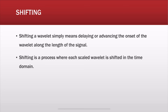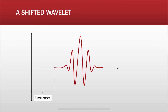What is shifting? Shifting is in the time domain. Shifting a wavelet simply means delaying or advancing the onset of a wavelet along the length of the signal. It's a process where each scaled wavelet is shifted in the time domain. For example, you shift a wavelet by a time offset — you're actually shifting the wavelet by the prescribed time.